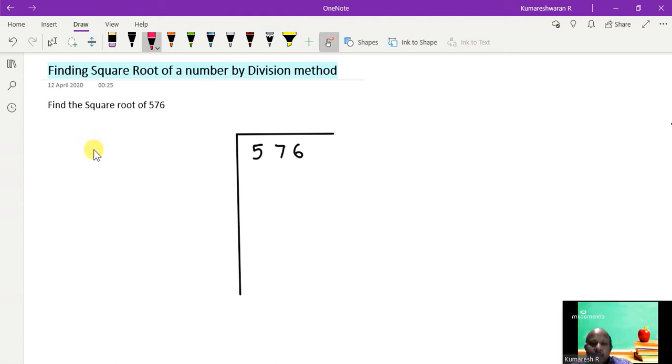So here is the 3-digit number 576, and we are going to find the square root of this by division method.